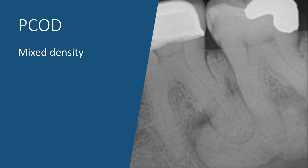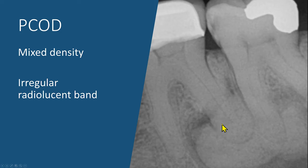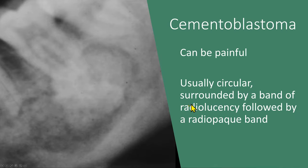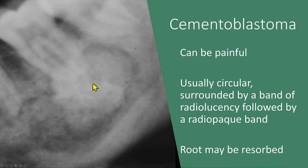Periapical cemento-osseous dysplasia is also easy to identify: in its later stage there are irregular radiopacities surrounded by an irregular radiolucent band, and it is most common in middle-aged females of African descent. A cementoblastoma can be symptomatic, while a dense bone island is symptom-free. A cementoblastoma is circular or oval, surrounded by a band of radiolucency followed by a radiopaque band — in a dense bone island there is no radiolucent band. Root resorption may be seen with a cementoblastoma.